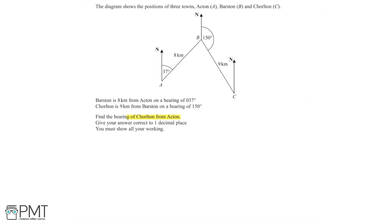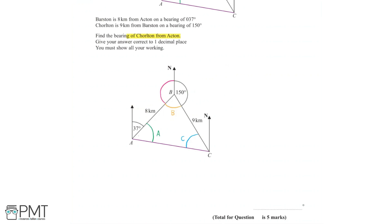Looking at our diagram, we can see that we can create a triangle ABC, and this triangle will help us to find the bearing of Cholton from Acton. This bearing would be equal to the angle labelled in green. Let's make a copy of this diagram below and add in lots of different angles that we'll need in order to find this bearing. The bearing of Cholton from Acton would be equal to 37 degrees plus angle A.